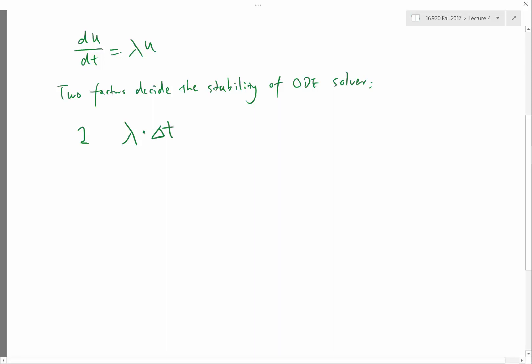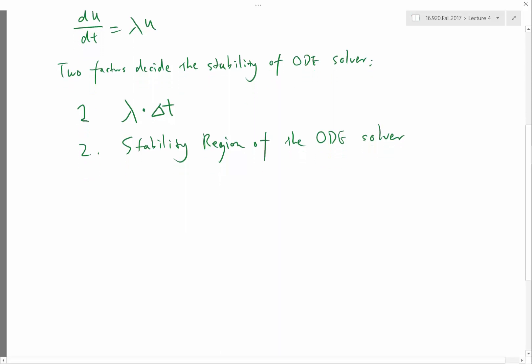So lambda times delta t is the first value you should look at in looking at the stability. And two is the stability region of the ODE solver. So stability region is a region in the complex plane, and the complex plane is the complex plane for lambda times delta t. So this is the real of lambda times delta t, this is the imaginary part of lambda times delta t.